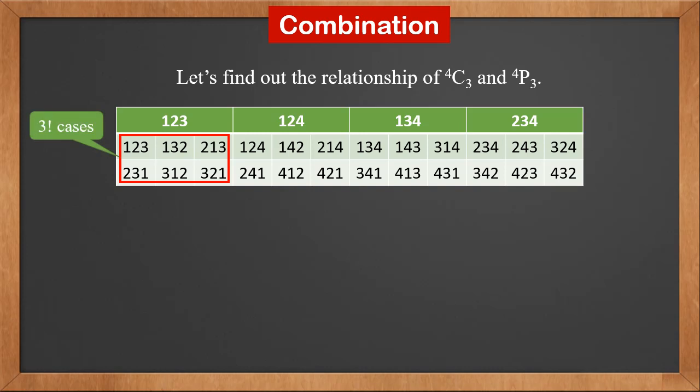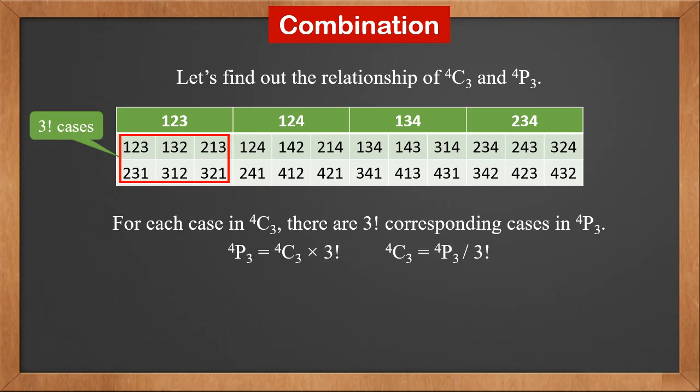For each of the other three combinations, there are three factorial different arrangements also. So for each case of 4C3, there are three factorial corresponding cases in 4P3. Therefore, 4P3 is 4C3 times 3 factorial, and 4C3 is 4P3 divided by 3 factorial.